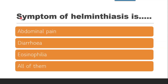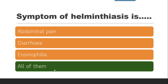Next question: Symptoms of Helminthiasis — abdominal pain, diarrhea, eosinophilia. Abdominal pain is a symptom of Helminthiasis. Diarrhea is also one of the symptoms of Helminthiasis. And eosinophilia, that is increase in WBC, is also one of the symptoms. Other symptoms are GI inflammation, dehydration, fever, fatigue, anorexia, etc. So the correct answer is all of them.